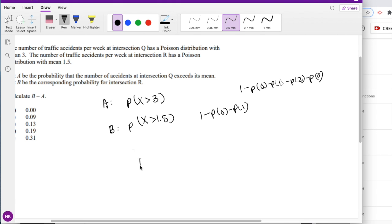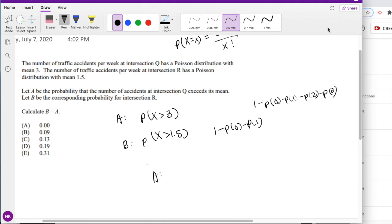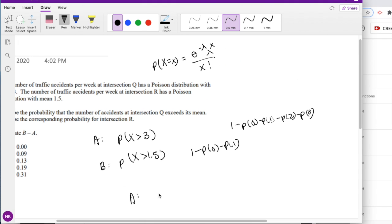Let's do A. We know mean is 3, so we can plug it into our formula. e to the negative 3, 3 to the 0 over 0 factorial...